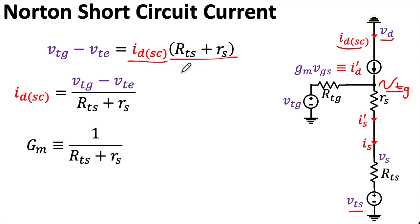Let's define a big GM, which is 1 over RTS plus RS. So I can write this compactly as VTG minus VTS, the difference between these Thevenin equivalent voltages, times big GM.